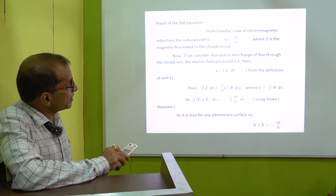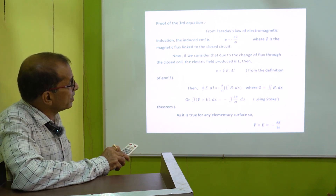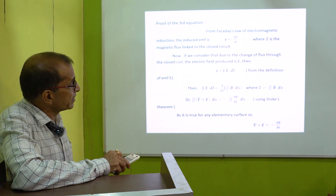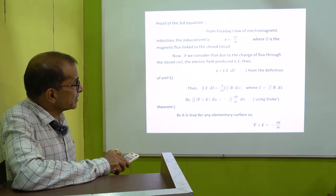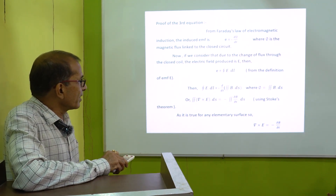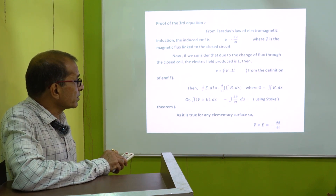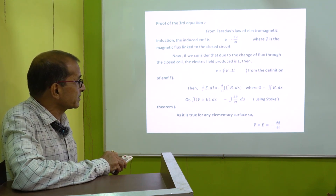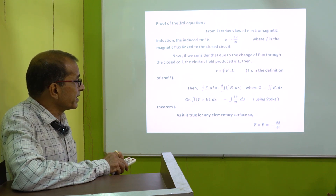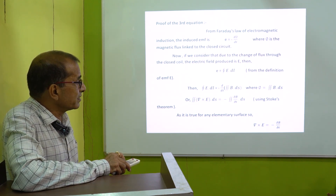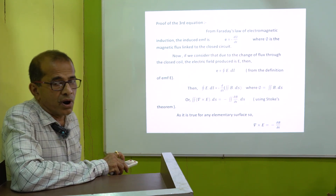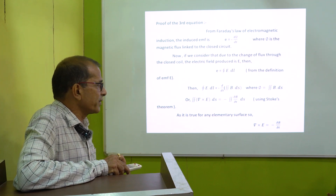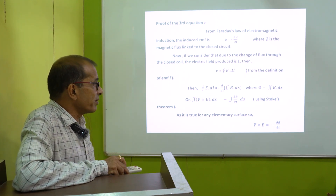From this equation, we can write ∮E·dL equal to -d/dt of Φ, where Φ equals ∫B·dS. When we integrate it over a surface, we get the flux linked with that surface. From Stokes' law, we have converted this line integral to surface integral: curl of E·dS equal to minus surface integral ∂B/∂t·dS. As it is true for any elementary surface, curl of E equal to minus ∂B/∂t. This is the proof of the third equation.